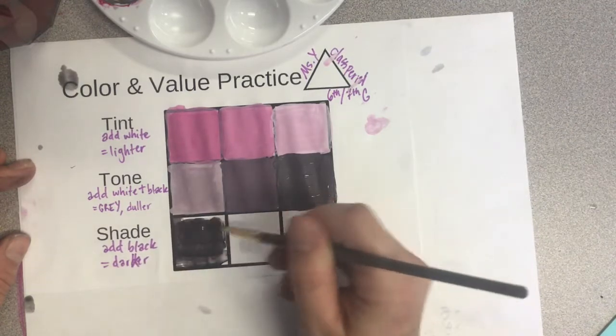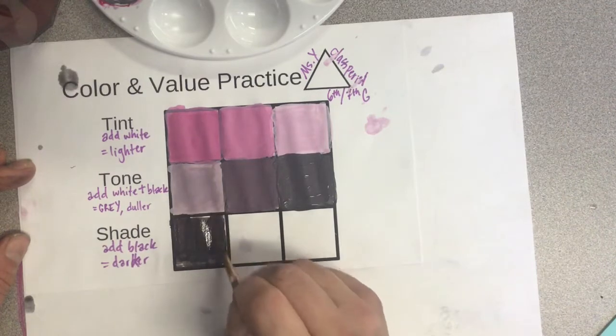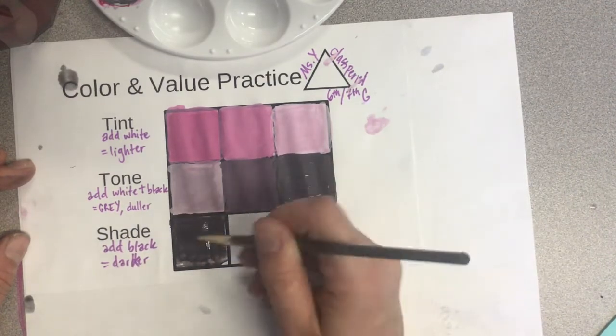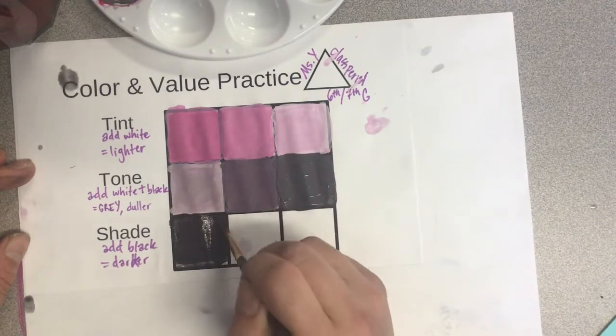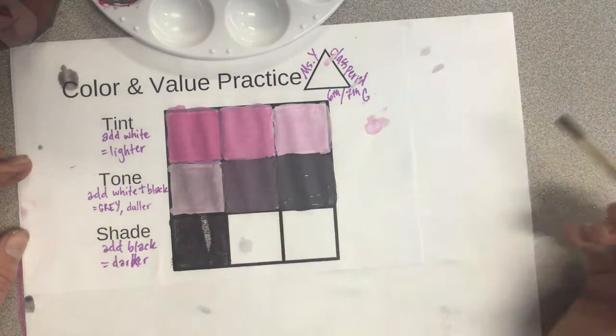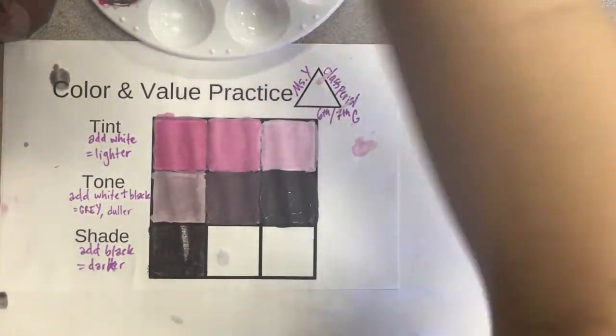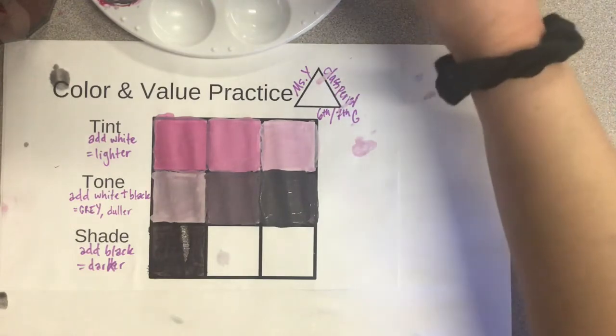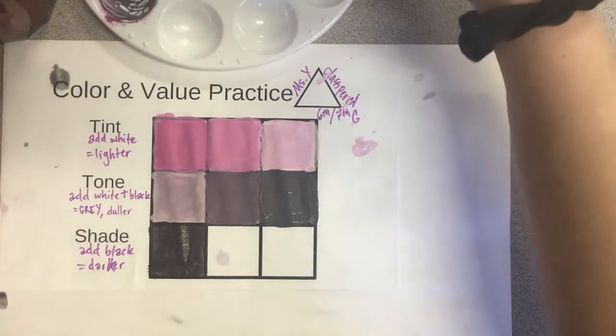If you notice your paint looks really thin, that means that you have too much water on your brush, so get a paper towel and dry your brush. This is not like watercolor. We want to apply it nice and thick, but not so thick that it rips a hole on your paper. I'm cleaning my brush again. I'm going to add more of my base color or my hue that I'm starting with since I already have black down.